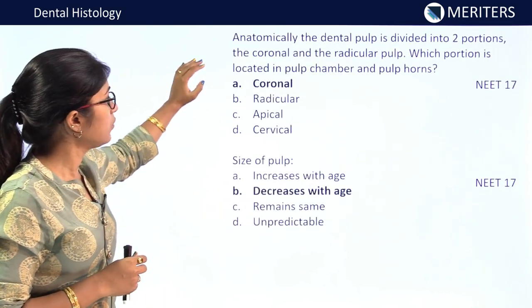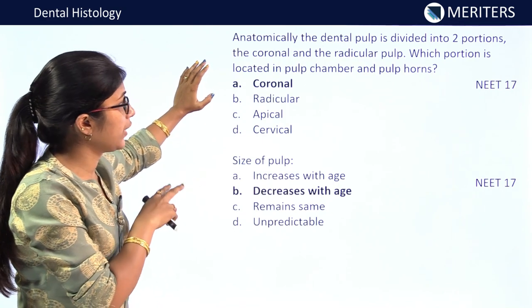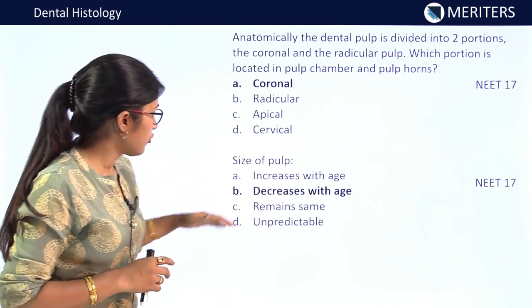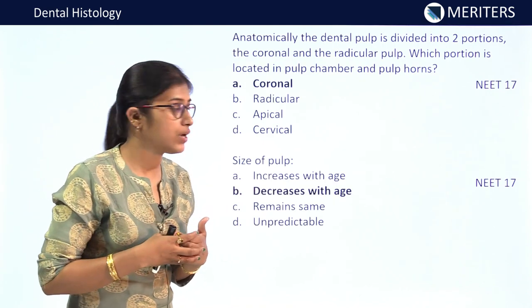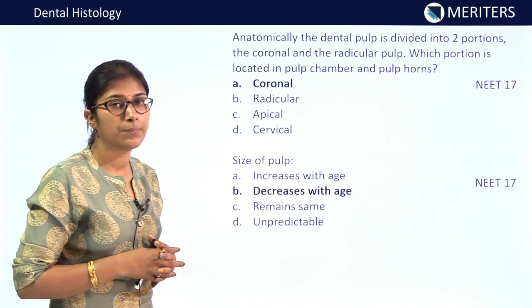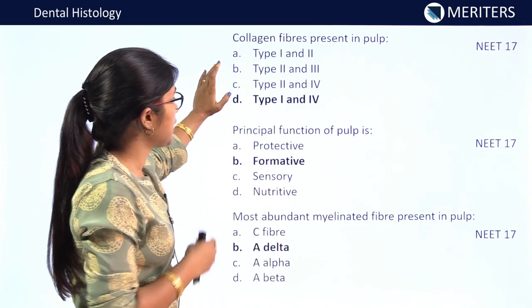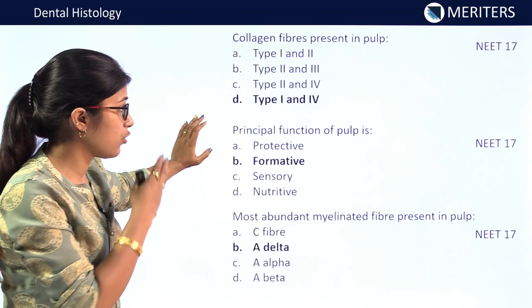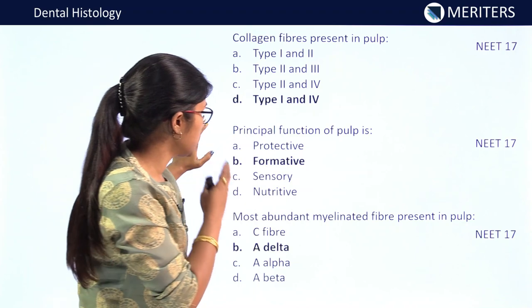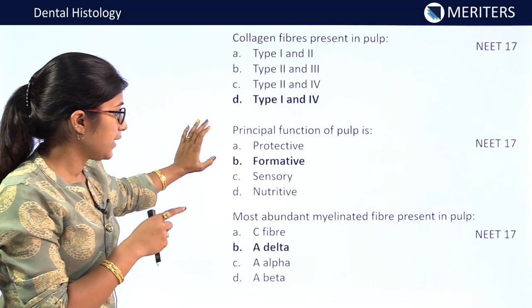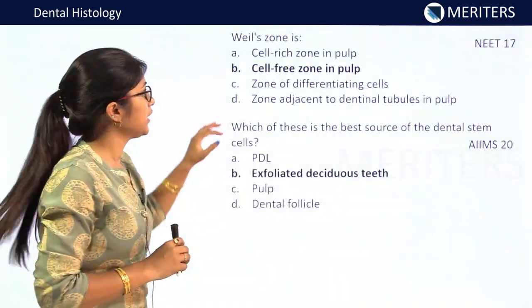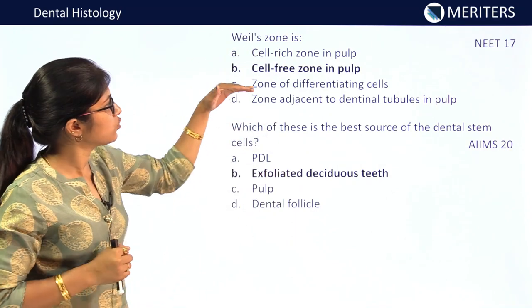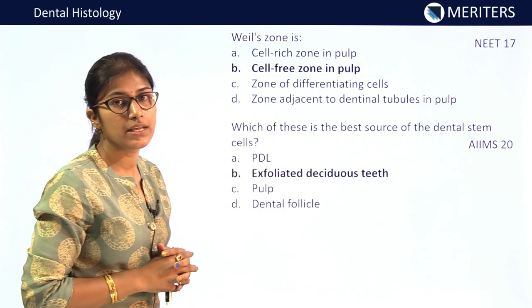Anatomically, dental pulp is divided into coronal and radicular portions — the portion located in pulp chamber and pulpal horns is coronal — NEET 2017. Size of pulp decreases with age — NEET 2017. Collagen fibers present in pulp are type 1 and type 4 — NEET 2017. Principal function of pulp is formative — NEET 2017. Most abundant myelinated fibers present in pulp are A-delta fibers — NEET 2017. Weil's zone is the cell-free zone in pulp — NEET 2017.